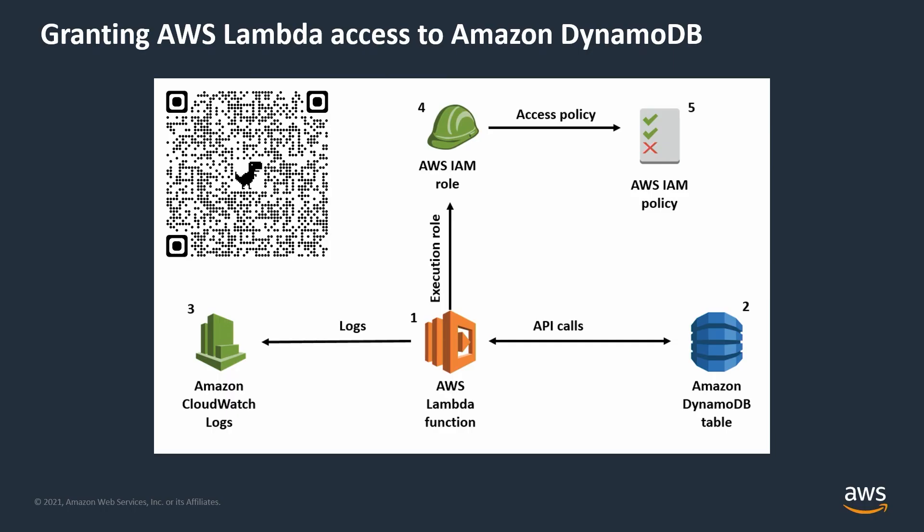In this example, I use a Lambda function labeled number one to make read API calls such as get and scan, and write API calls such as put or update to a DynamoDB table, number two. The Lambda function also writes log files to CloudWatch logs, shown by number three. The Lambda function uses an IAM role, number four, that has an IAM policy attached that grants access to DynamoDB and CloudWatch, number five.